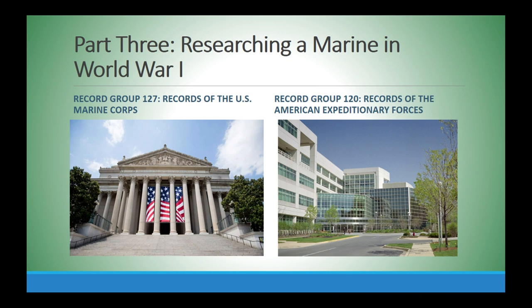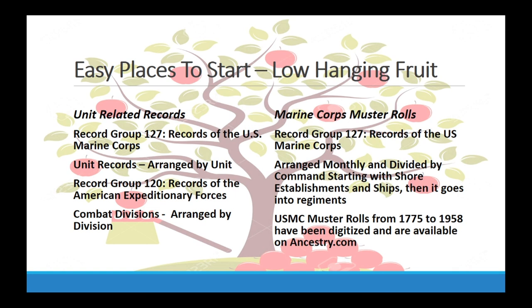Part Three covers researching your marine, which is more complicated because records are in both buildings. Record Group 127 — Records of the U.S. Marine Corps — is at the National Archives building in Washington, D.C. However, because the Fourth Marine Brigade was part of the American Expeditionary Forces, records also exist in Record Group 120 — Records of the American Expeditionary Forces — at the College Park facility. RG 120 is technically an Army record, which is why it's at Archives II rather than Washington.